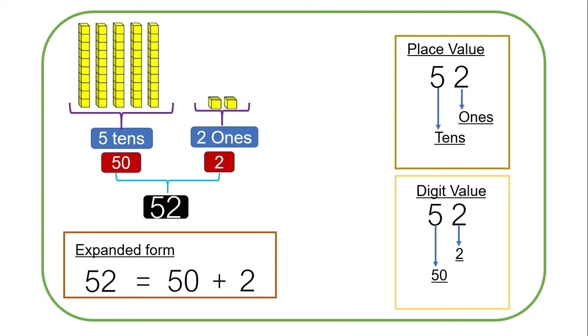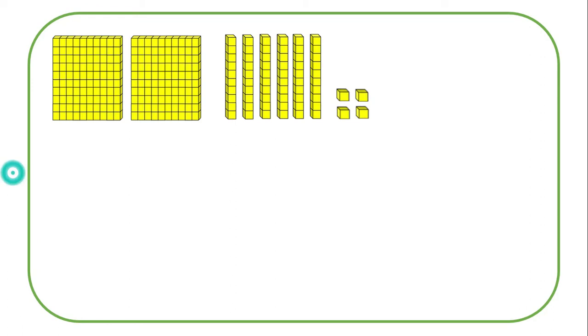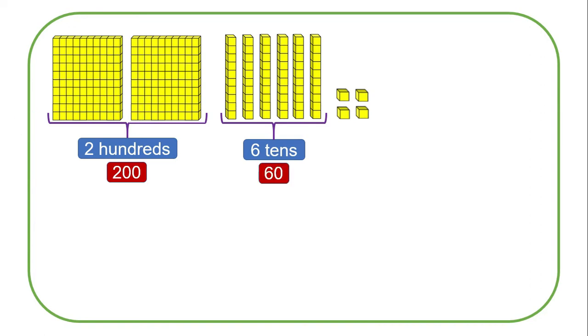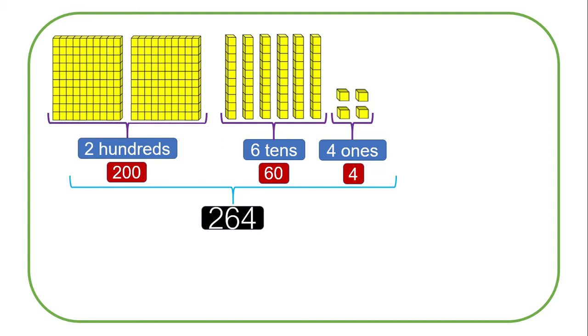Let us look at another number. We have got two blocks of hundreds, six blocks of tens, and four blocks of ones. Two blocks of hundreds means two hundreds, which is 200. Six blocks of tens is the same as 60. Four blocks of ones is the same as four, and the whole number is 264.